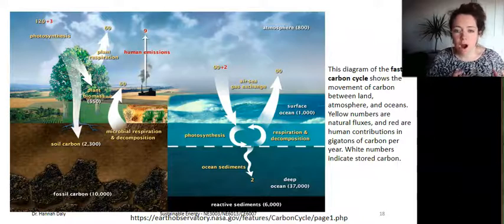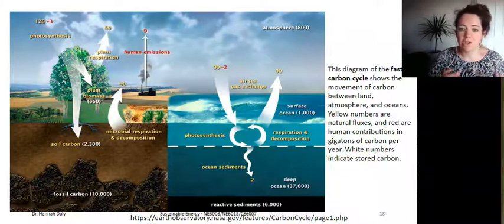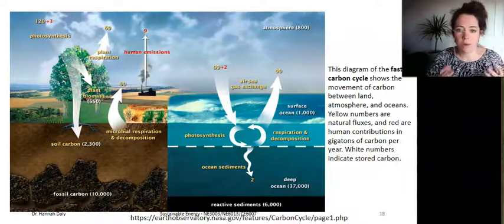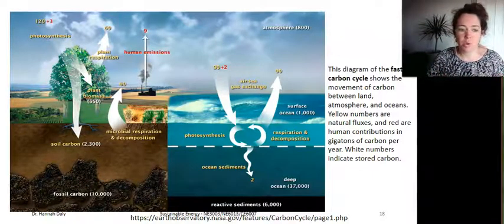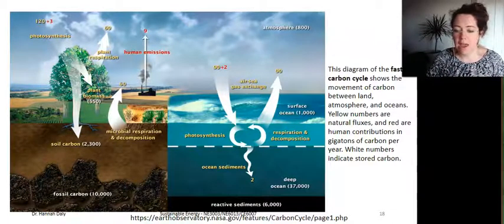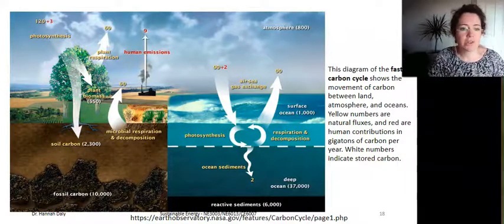Carbon flows between each of these reservoirs in an exchange called the carbon cycle. The carbon cycle has slow components which take place over millennia and even longer time periods, and it has fast components.